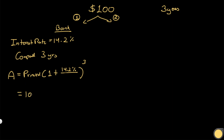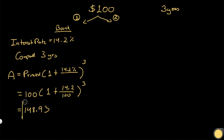So the principal is a hundred dollars, and one plus the rate is 14.2 percent, raised to the power of three. This comes out to $148.93. That means if you keep your hundred dollars in the bank for three years compounding at 14.2 percent, after three years you get $148.93. That is option one.